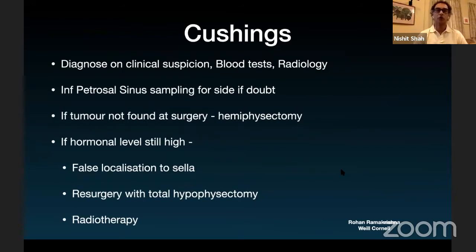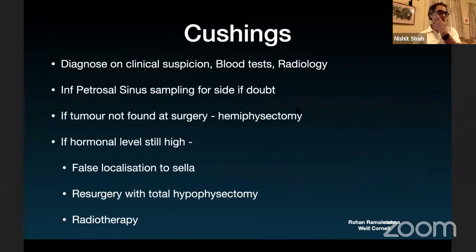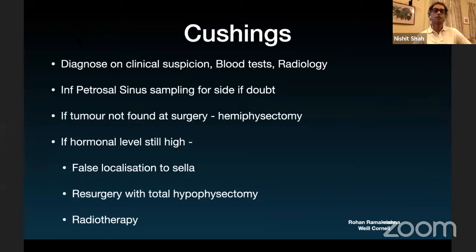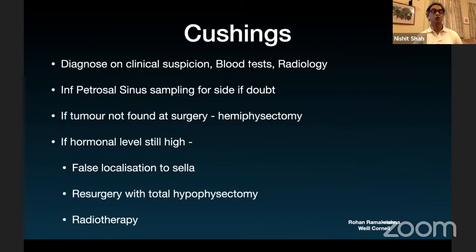Unlike prolactinomas, for Cushing's we would almost always operate. Cushing's is diagnosed on clinical suspicion — patient is putting on weight, not responding to other treatments. Confirmed via hormonal assays and radiology. It's not always easy to see the tumor — very often they're very small and on the edge, and there can be doubt about whether a tumor exists or on which side.